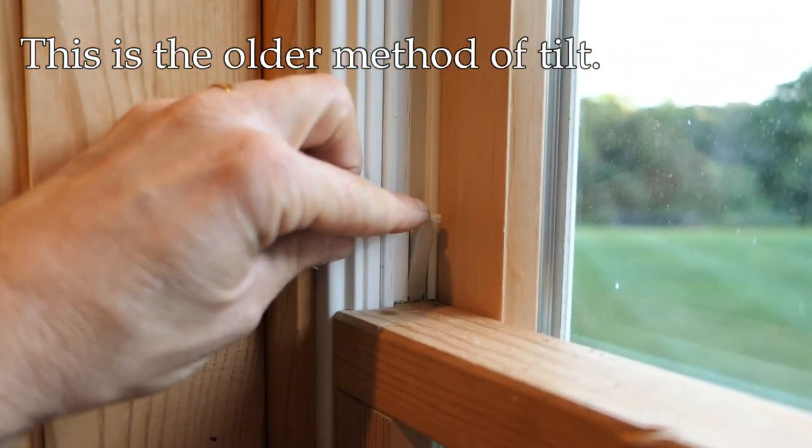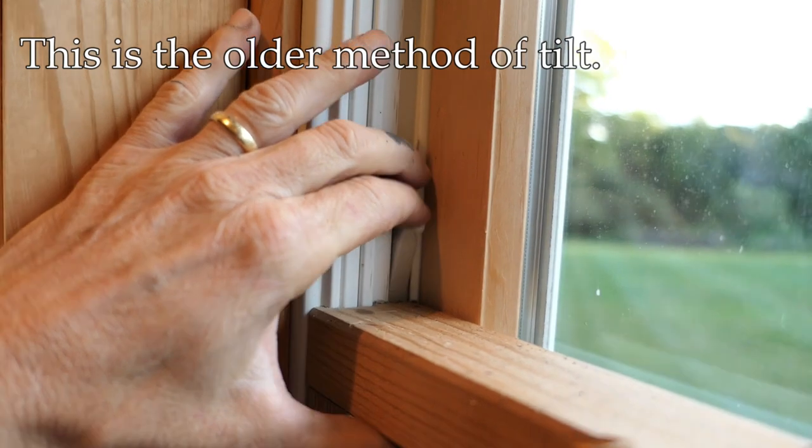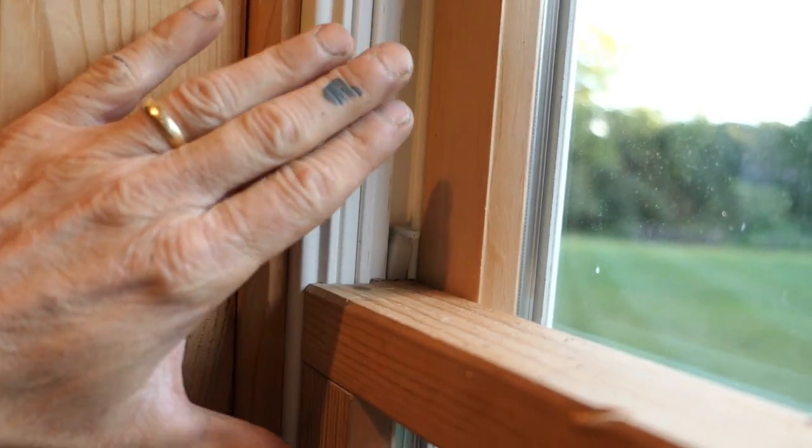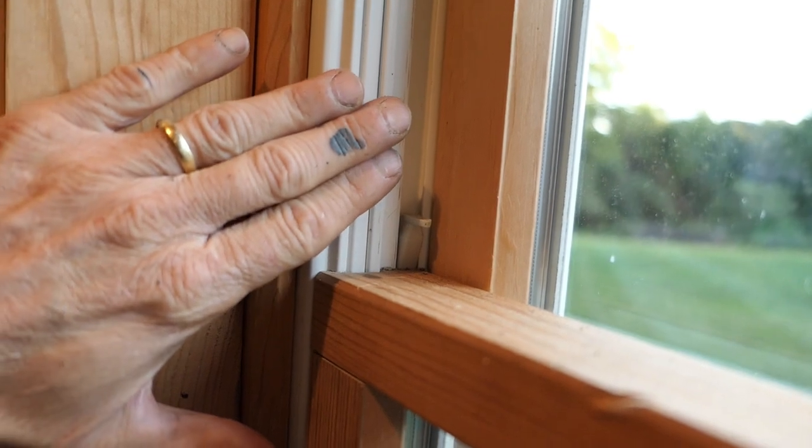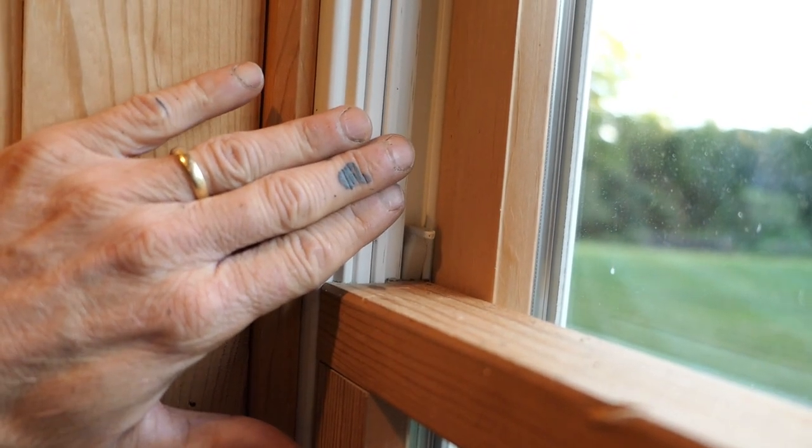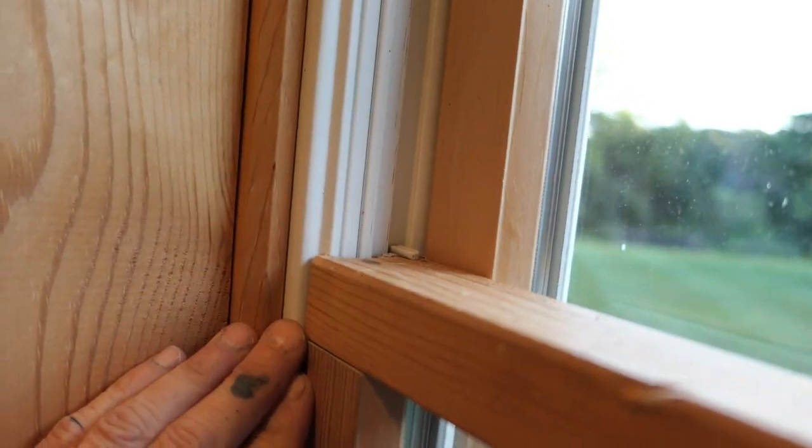I'll show you briefly how this lower sash tilts in. Push the window open a little bit. Up here you see this little slider, and you push that down to snap behind the sash and push this jam liner away from the sash.